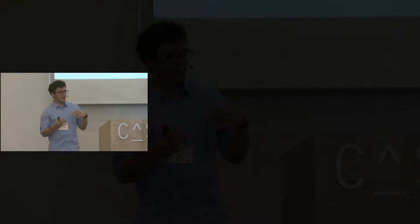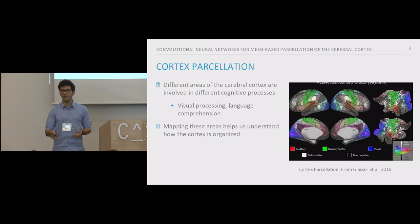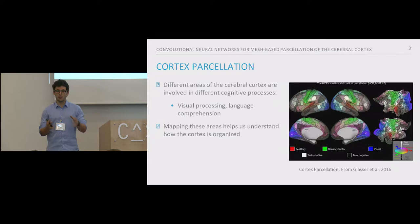There are different areas in the cortex and these areas are involved with our cognitive processes like visual processing, language processing, or social interactions. One challenge in understanding how the cortex is organized is to be able to create a map of these areas, or in other words, to parcellate the cortex into meaningful areas.